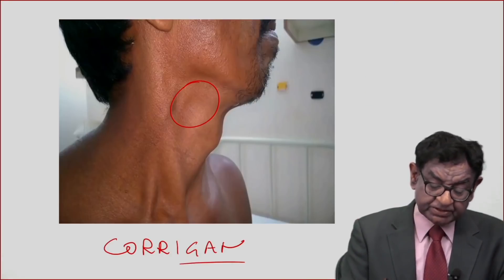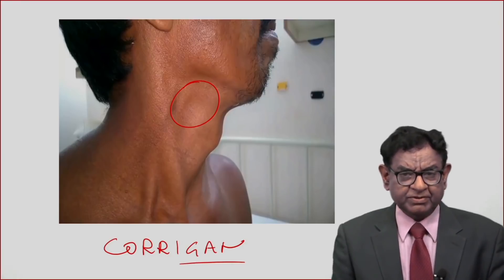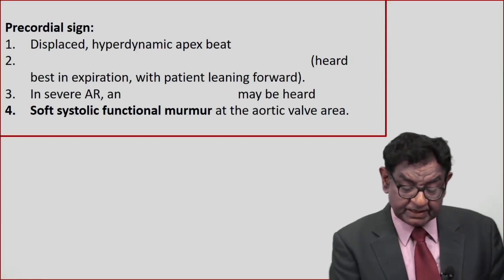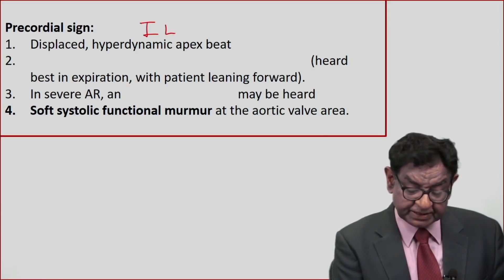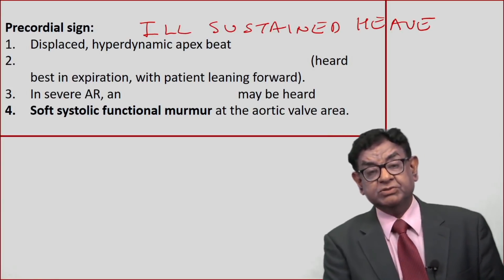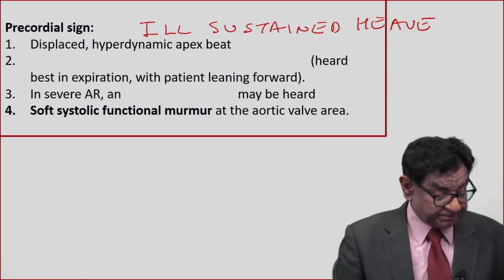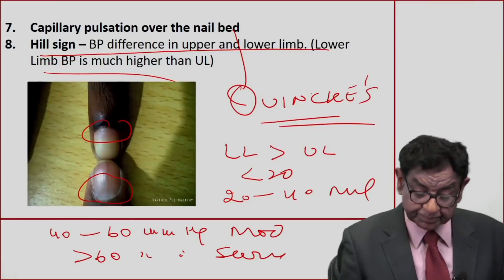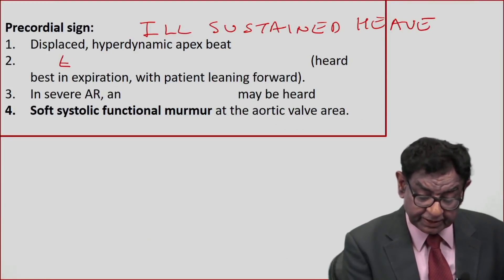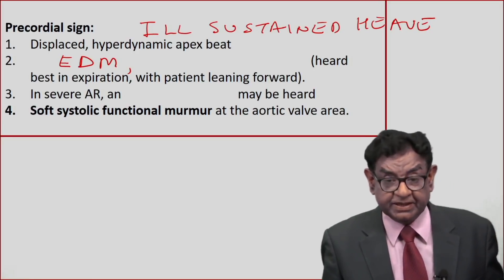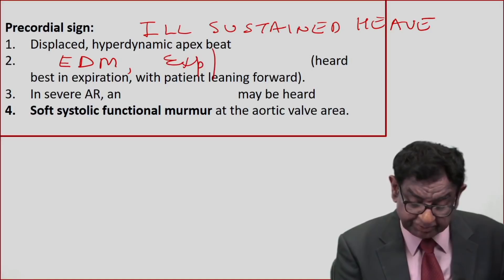These are the peripheral signs of AR you should know inside and out — the examiner will ask you about these. For precordial signs, you get a displaced and hyperdynamic apex beat — what we call an ill-sustained heave. In aortic stenosis you get a sustained heave, but here we get an ill-sustained apex beat. You also get a high-pitch early diastolic murmur in the aortic area, best heard in expiration with the patient leaning forward.